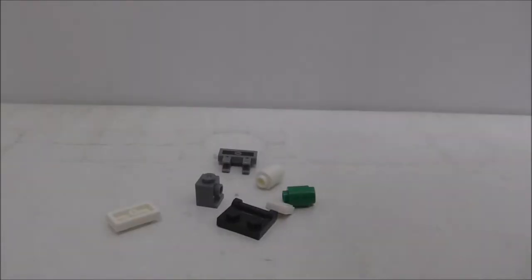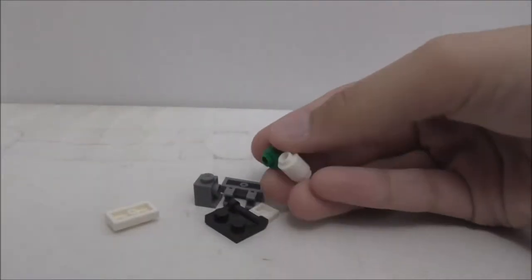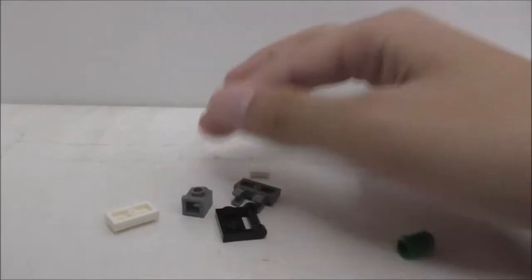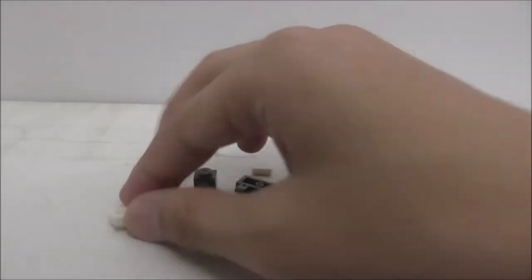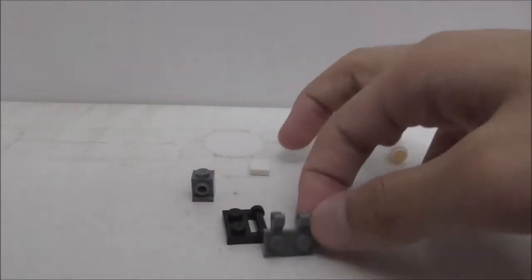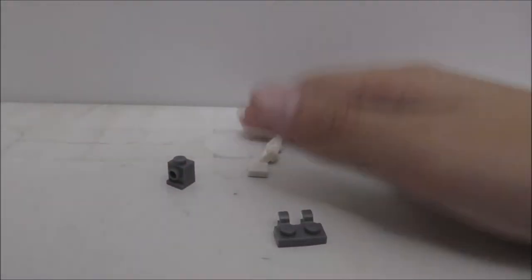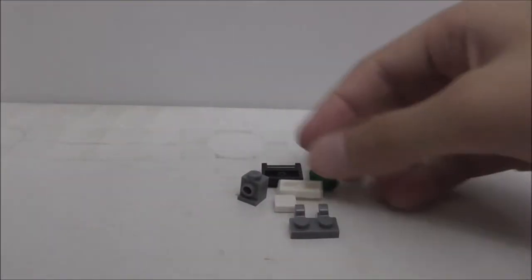These are the extra pieces here. You got some cylinder pieces, a one-by-one tile, this modified one-by-one brick and plates, these modified clips, and also this modified piece. The extra pieces are quite generous.